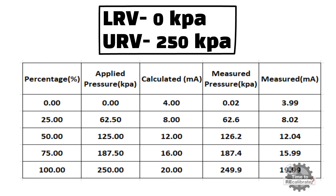When there is 25% input, the standard analog output value is 8 milliampere. And when there is 50% input, the standard analog output value is 12 milliampere. The standard analog output value is 16 milliampere for 75% of input. And the standard analog output value is 20 milliampere for 100% of input.